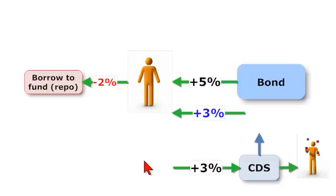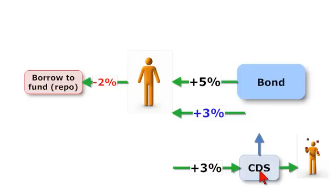I've omitted several important factors. I will note the hedge is far from perfect here — this credit default swap is only a specific kind of guarantee. Nevertheless, we're keeping the example simple.